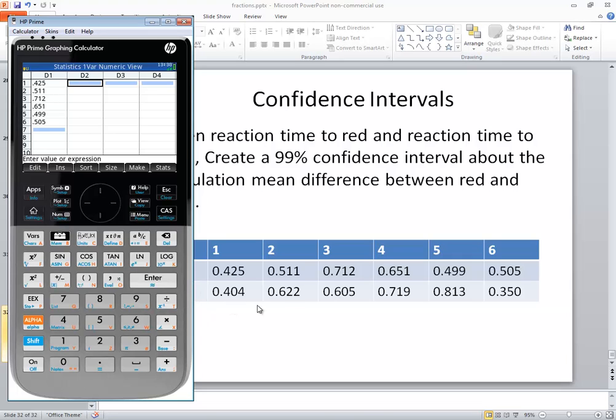Now I'll write her over to D2, and this is where I'll put in my second values, the blue values. So I've got 0.404, enter. 0.622, enter. 0.605, enter. 0.719, enter. 0.813, enter. 0.350, enter. And let me double check those. Those look okay.